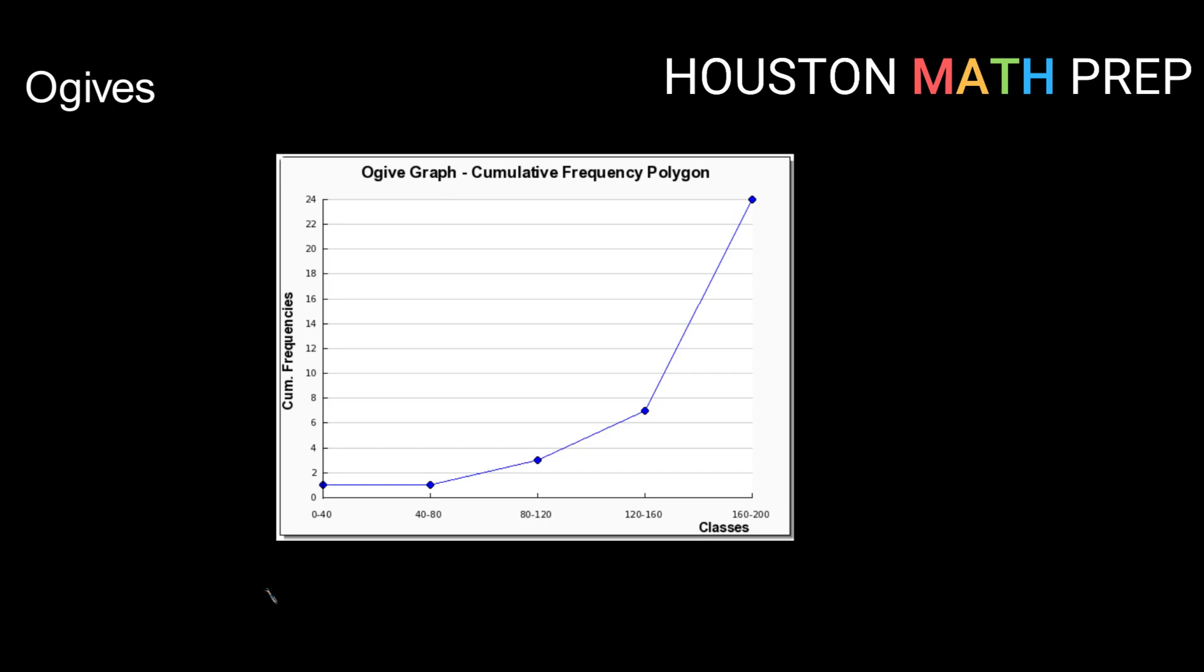Hey guys, Houston Math Prep here. In this video we're going to talk about cumulative frequency polygons which have their own special name called ogives. Ogives are made exactly the same way as a regular frequency polygon except that we use the cumulative frequency column instead of the regular frequency column.